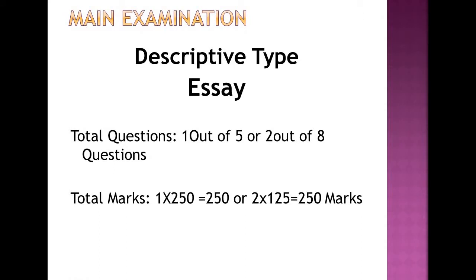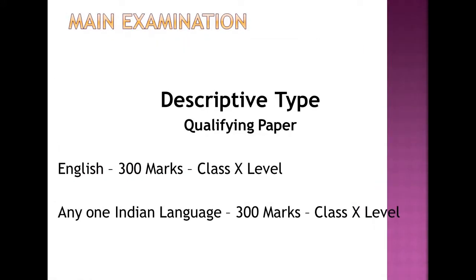For the descriptive essay, you need to write one or two essays totaling 250 marks. If writing 1 out of 5 essay options, each essay is worth 250 marks; if writing 2 out of 8, each essay is worth 125 marks, and the overall total is still 250 marks. The two qualifying papers require you to score just 25% passing marks out of 300 marks each.